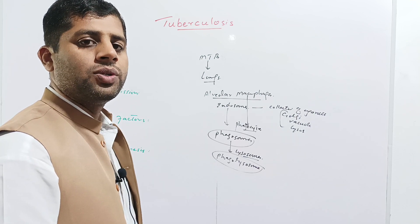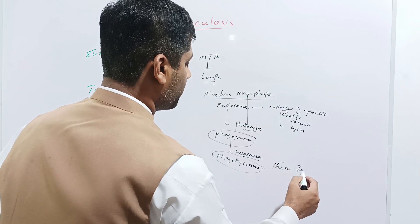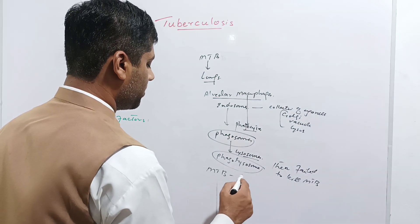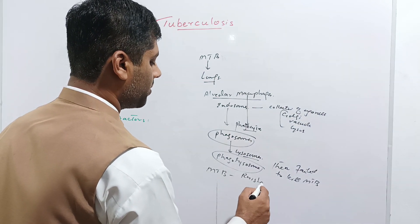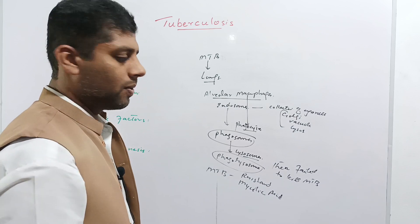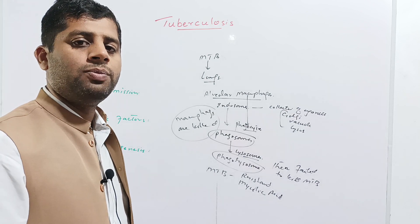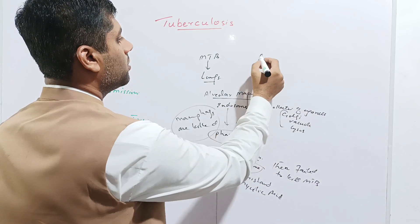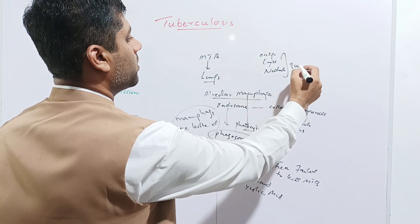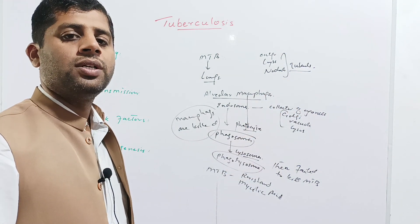However, the phagolysosome fails to kill MTB because MTB is highly resistant due to the presence of a mycolic acid capsule in its cell wall. Eventually the macrophages are killed, and the immune system of the lungs collapses. This leads to the formation of outgrowths, lumps, or nodules on the lungs called tubercles — these are the first lesions on the lungs.